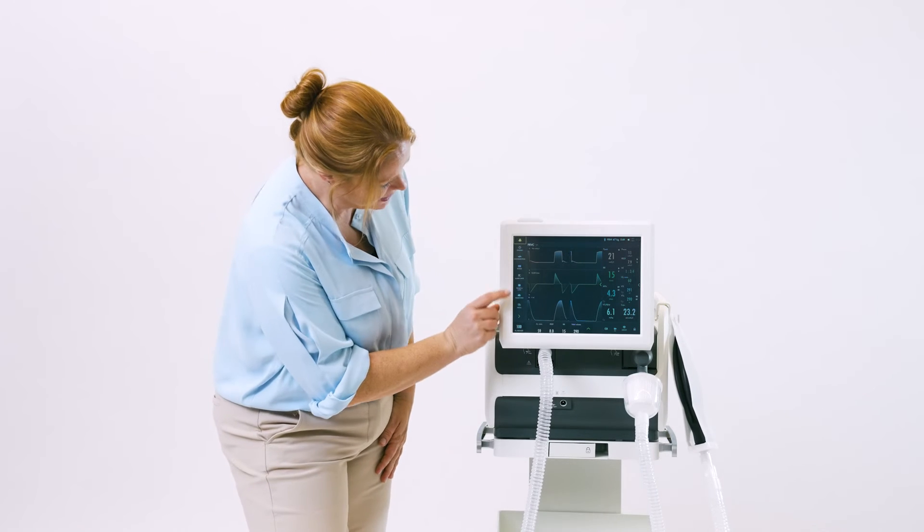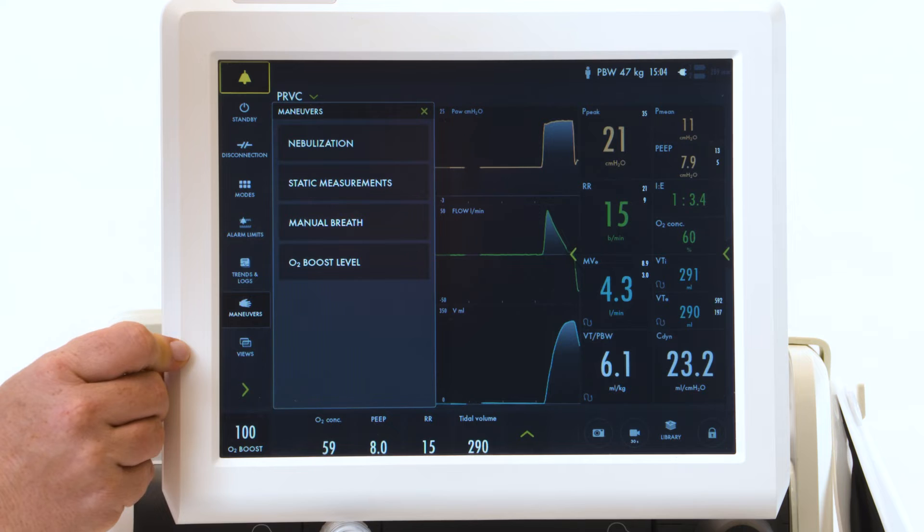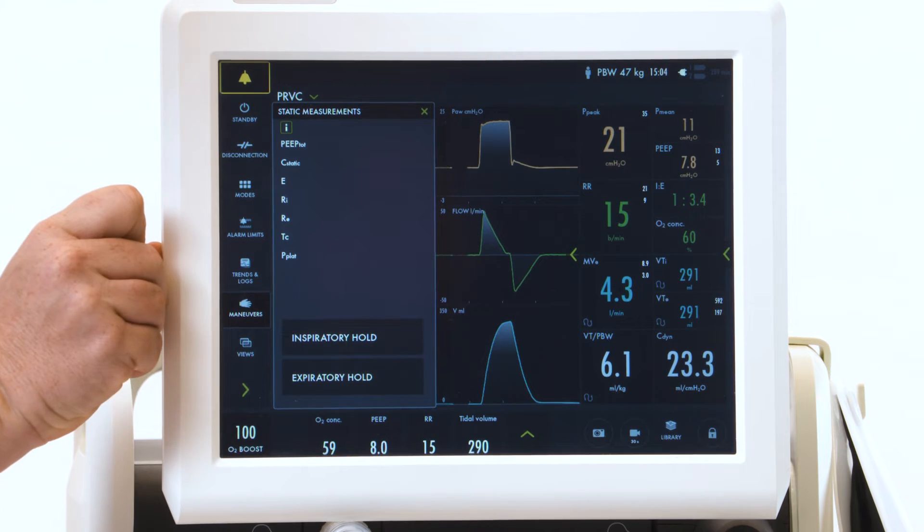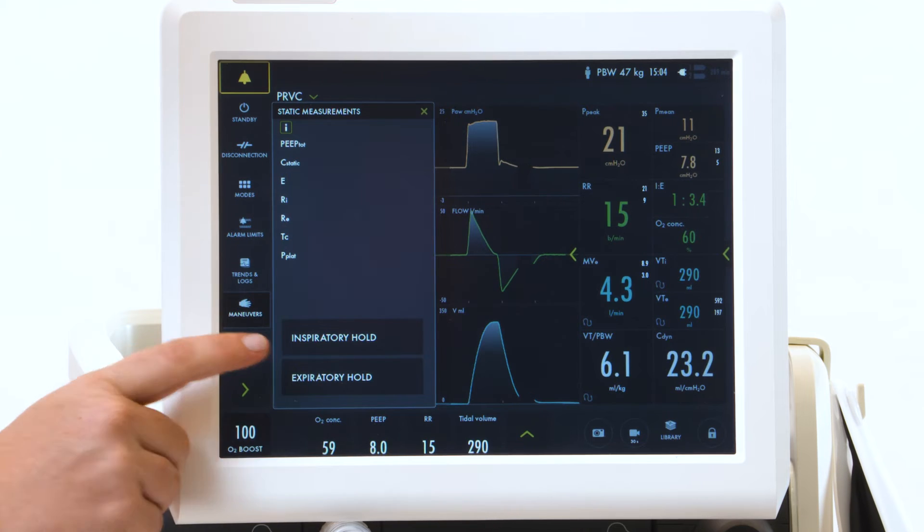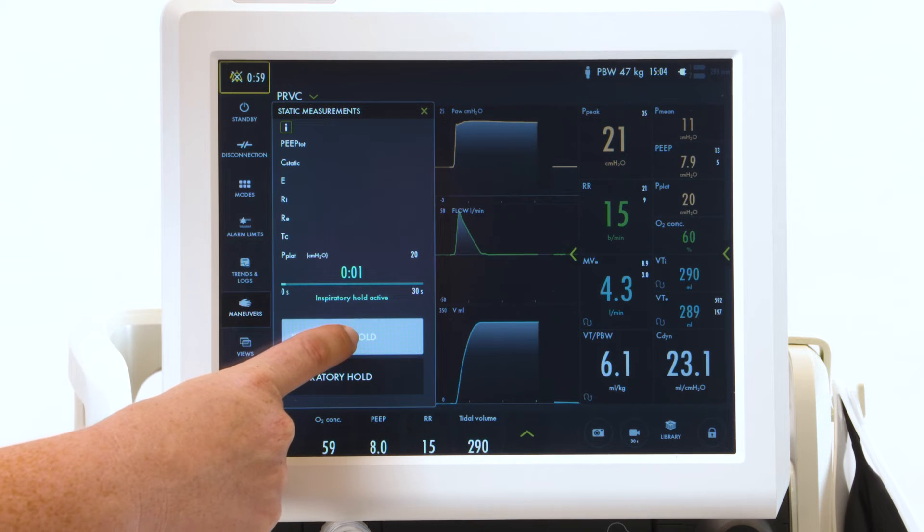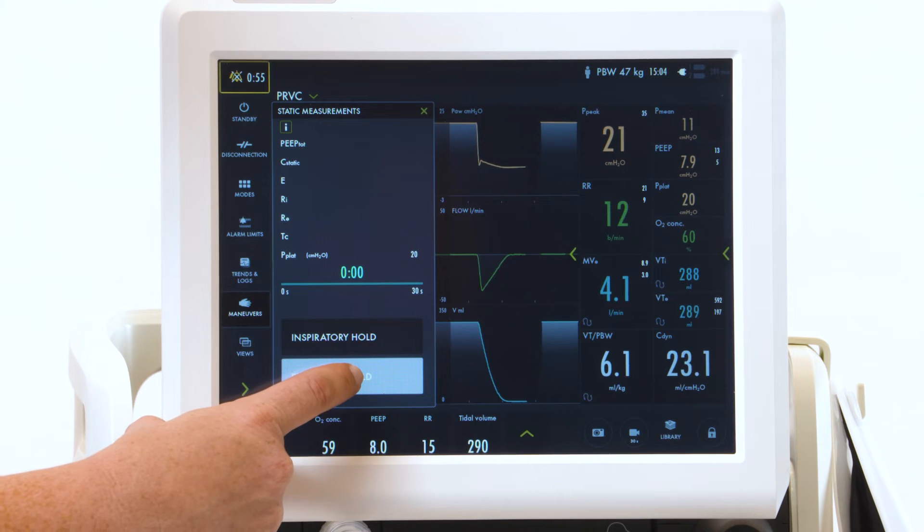Your inspiratory and expiratory hold are located underneath your maneuvers tab. Touch your maneuvers and select static measurements. This is where you can get measured values based on these holds. To activate an inspiratory hold, touch and hold until it beeps and says active for a second or two. Followed by an expiratory hold until it beeps and says active.